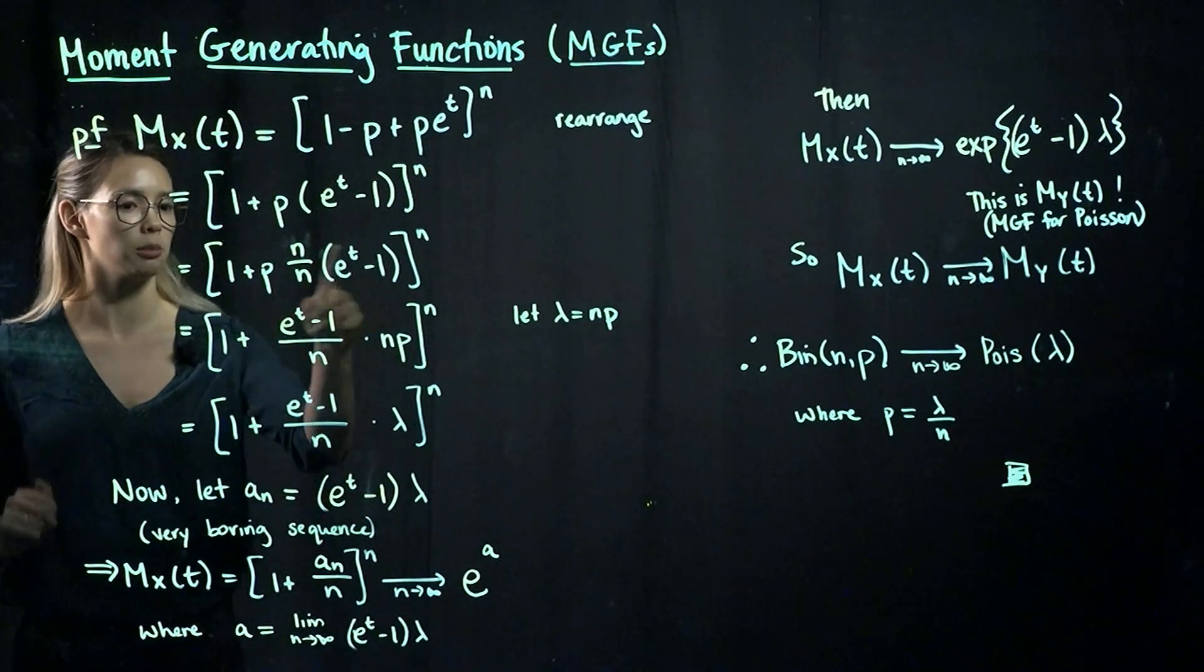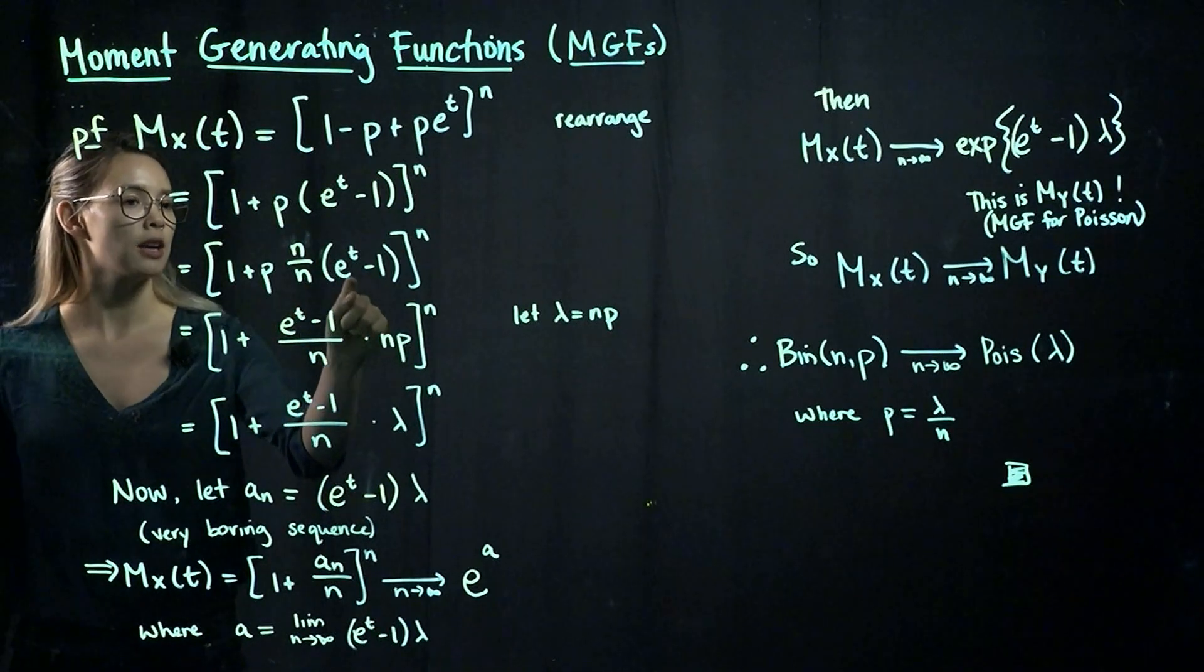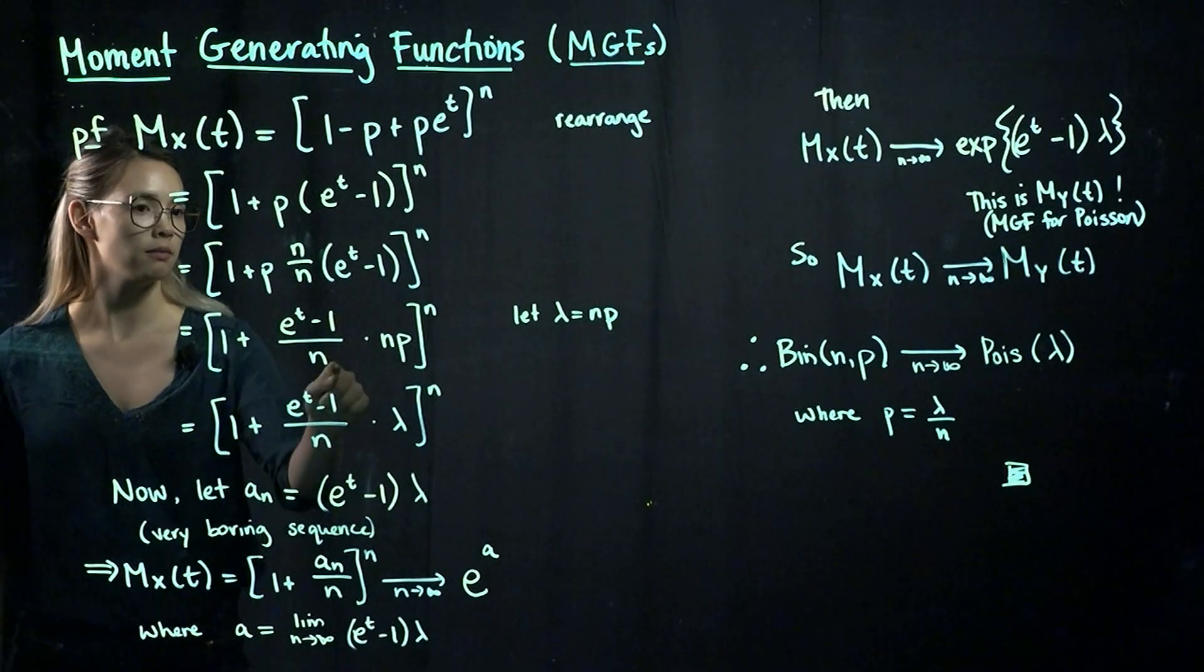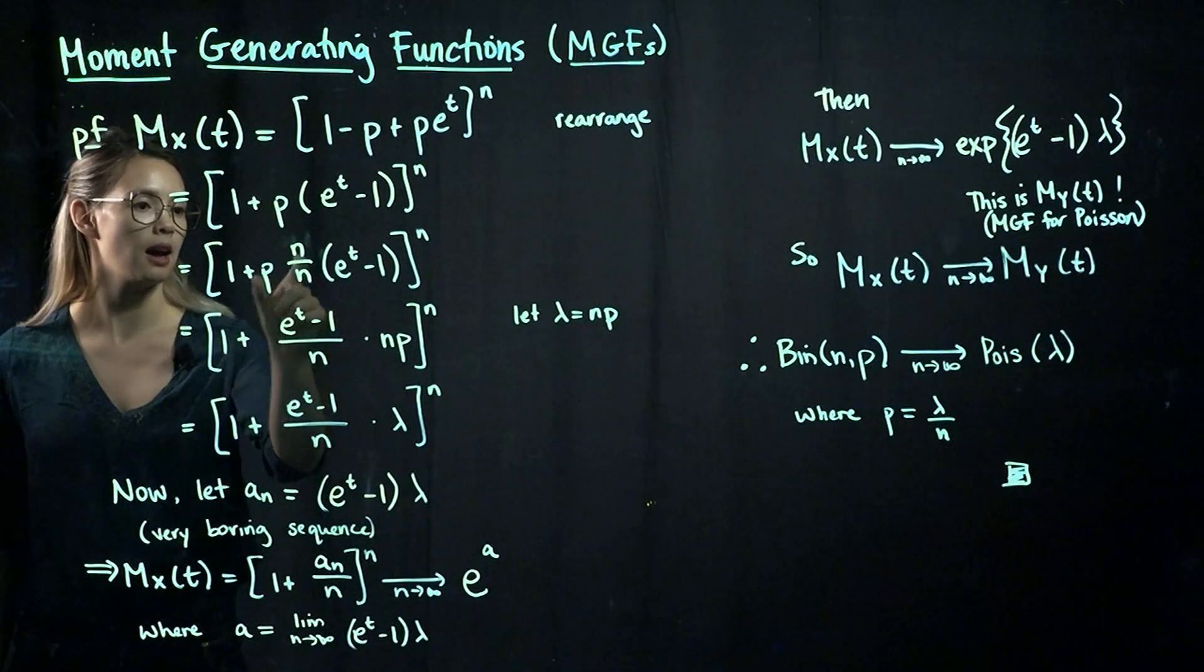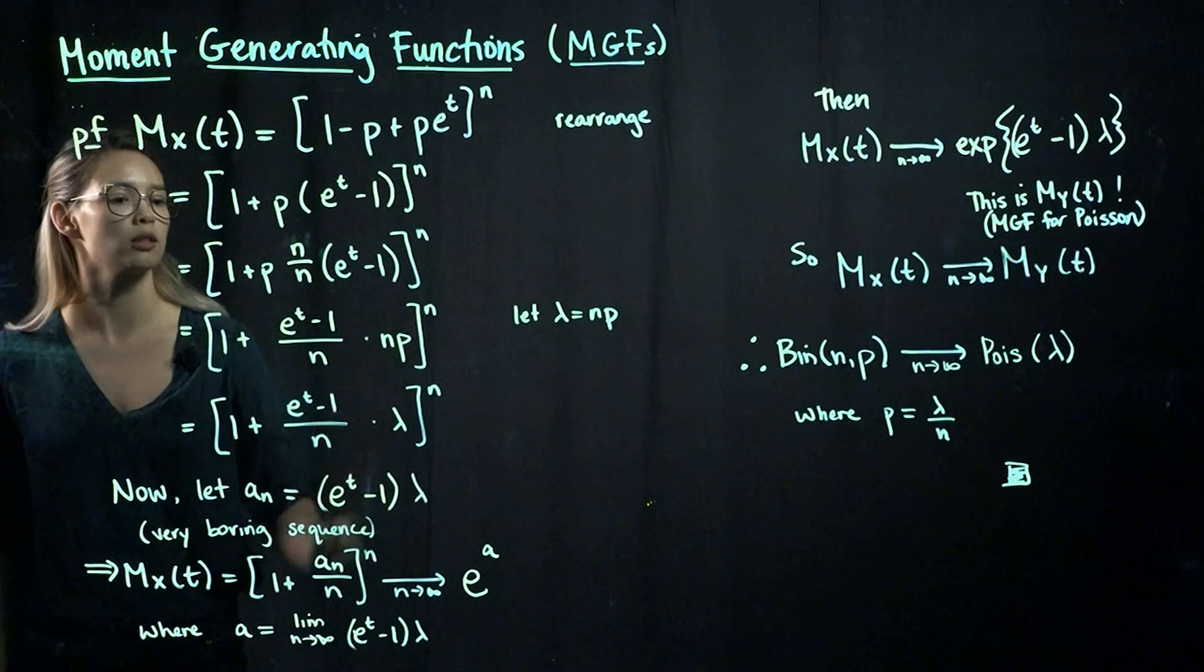And now we can rearrange this a little bit more. So let's have e to the t minus 1 over n, and then let's take n and p and collect those as well.